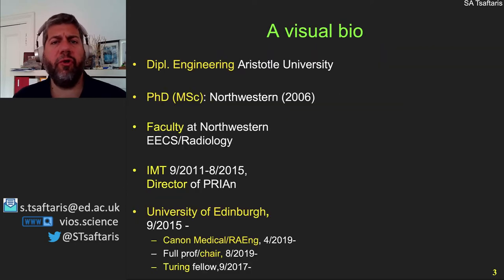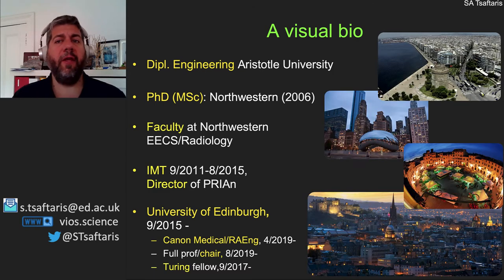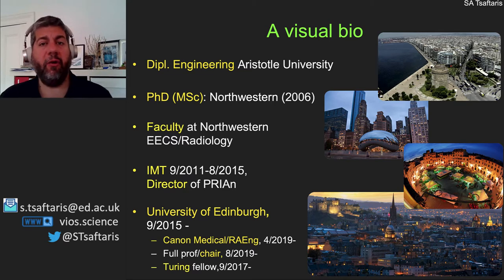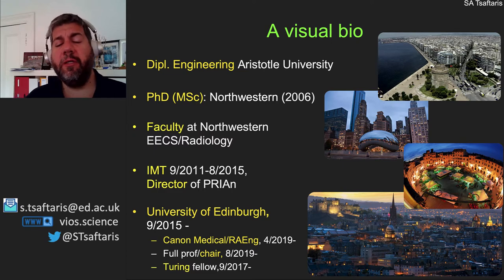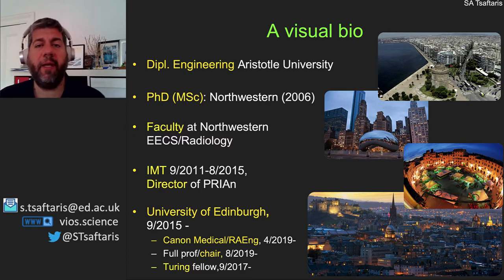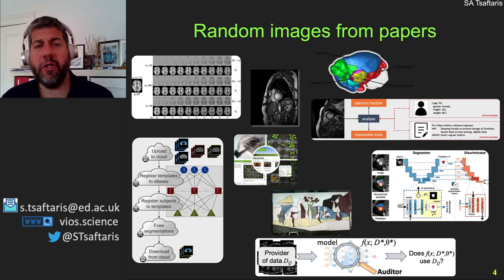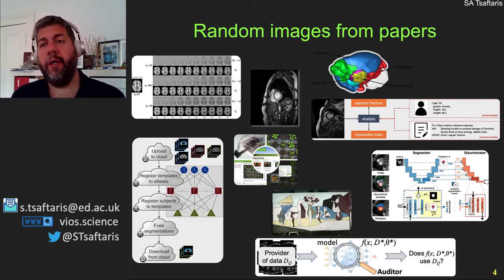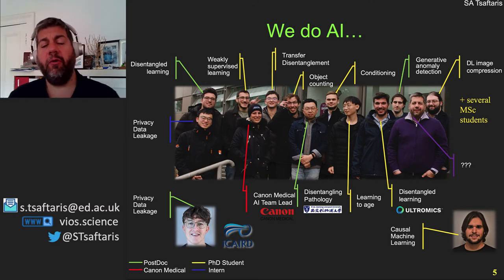I'll show you a brief visual bio. I got my undergraduate degree in computer science and engineering at Aristotle University in Greece. Then I moved to Chicago for my PhD, and stayed on as a professor in computer science, electrical engineering, and radiology. Then I moved for five years in Italy, and for the last six years I'm here at the University of Edinburgh. We do a lot of work regarding images — not only on plants, but also in healthcare, medical imaging, and art. We've also worked on privacy problems related to distributed learning.